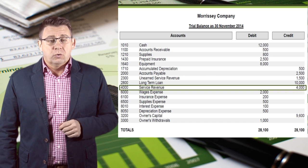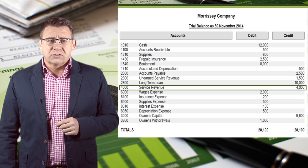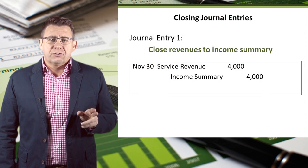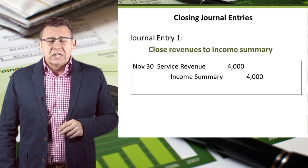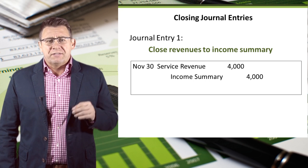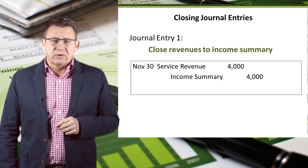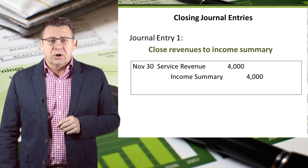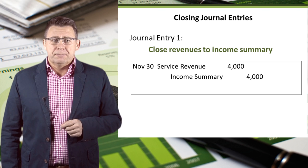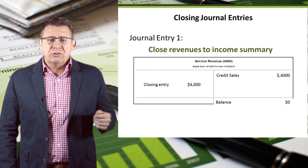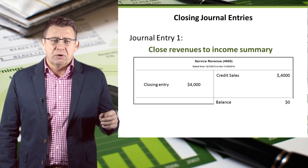Let's start with service revenue, which has a credit balance of $4,000. The first journal entry is to close revenues to income summary. Since revenues have a $4,000 credit balance, we will debit service revenue to make the balance zero. Income summary will then be credited. After posting this entry, the balance in the service revenue account is zero.